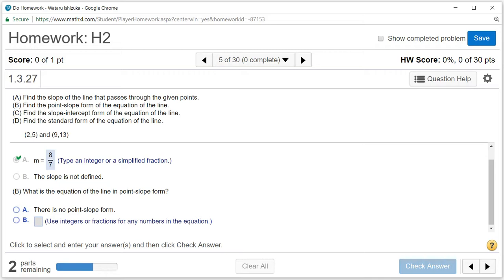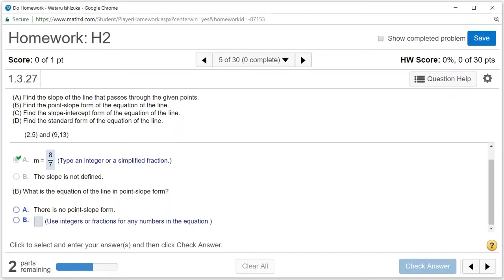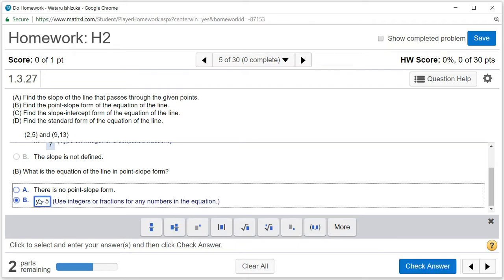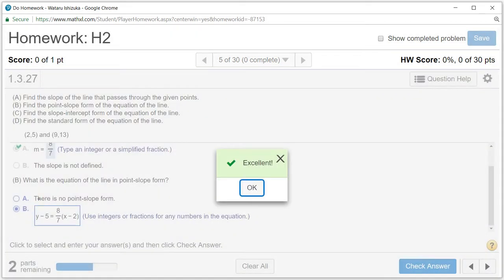Next question: what is the equation of the line in point-slope form? For part B, if you want to find the point-slope form, we just need the point. I'm going to use x1 and y1. So it's y minus y1, which is 5, is equal to slope 8 over 7, times the quantity x minus x1, which is 2. So it's y minus 5 equals 8 over 7 times the quantity x minus 2. Let's check the answer — we got that.